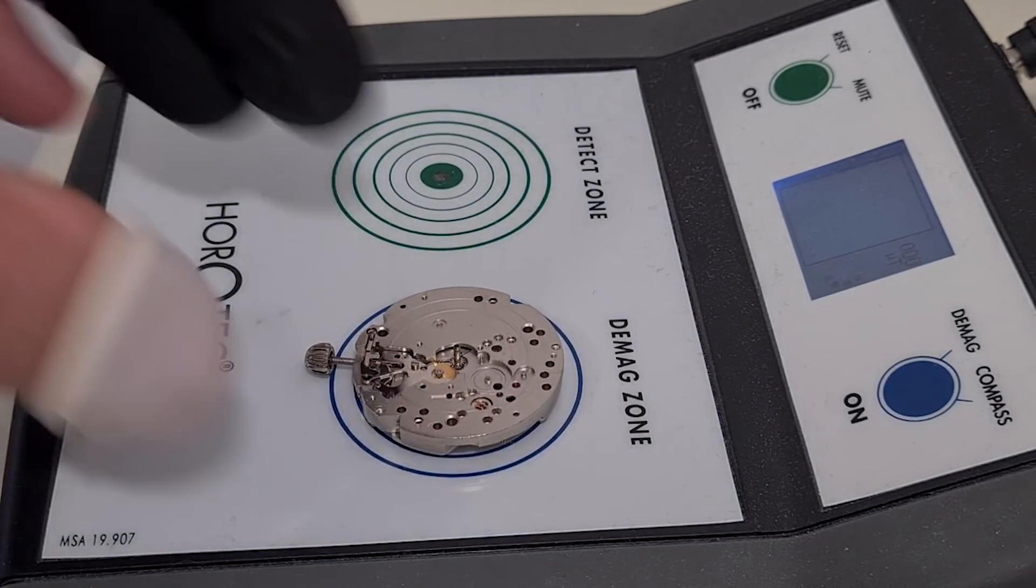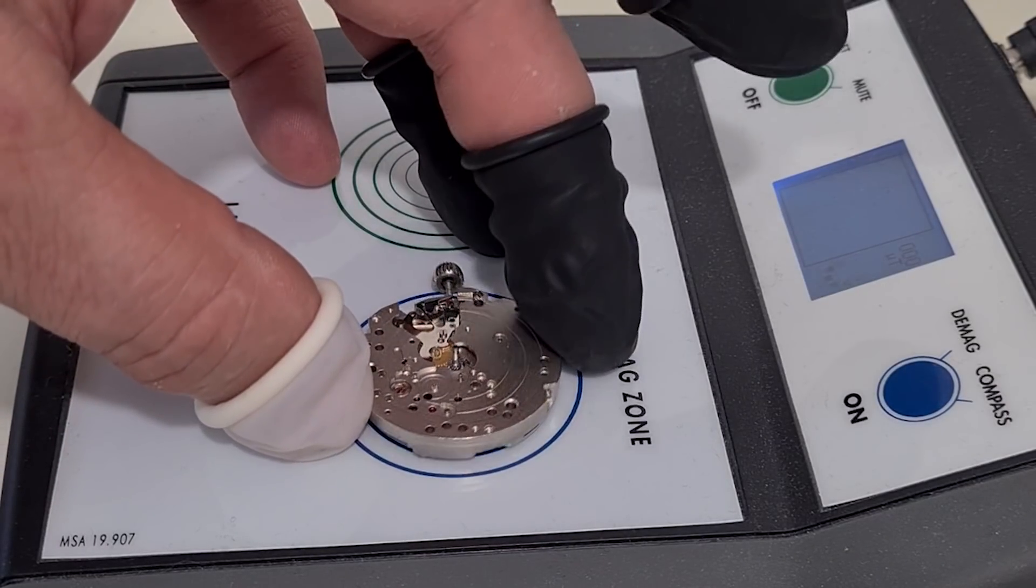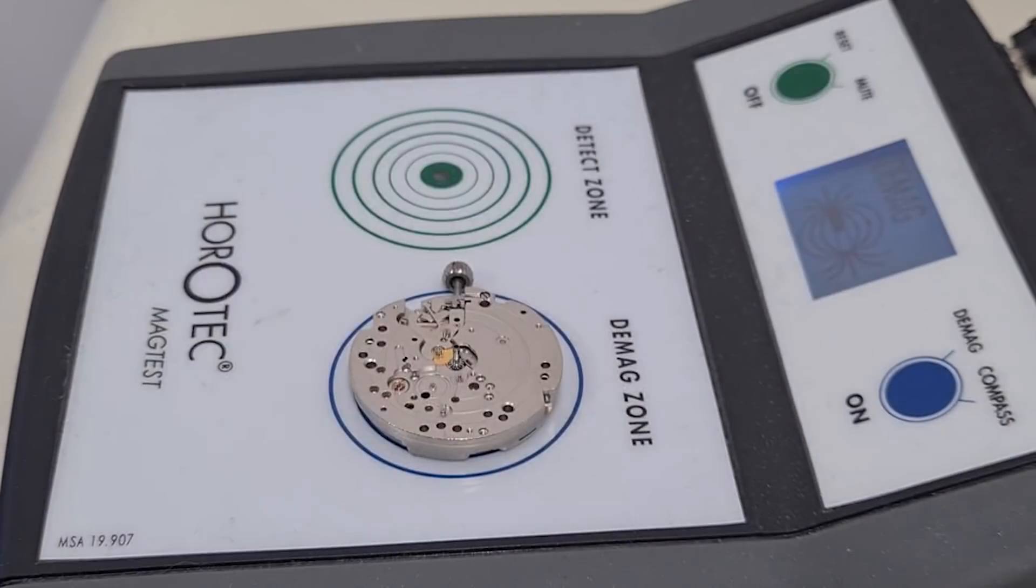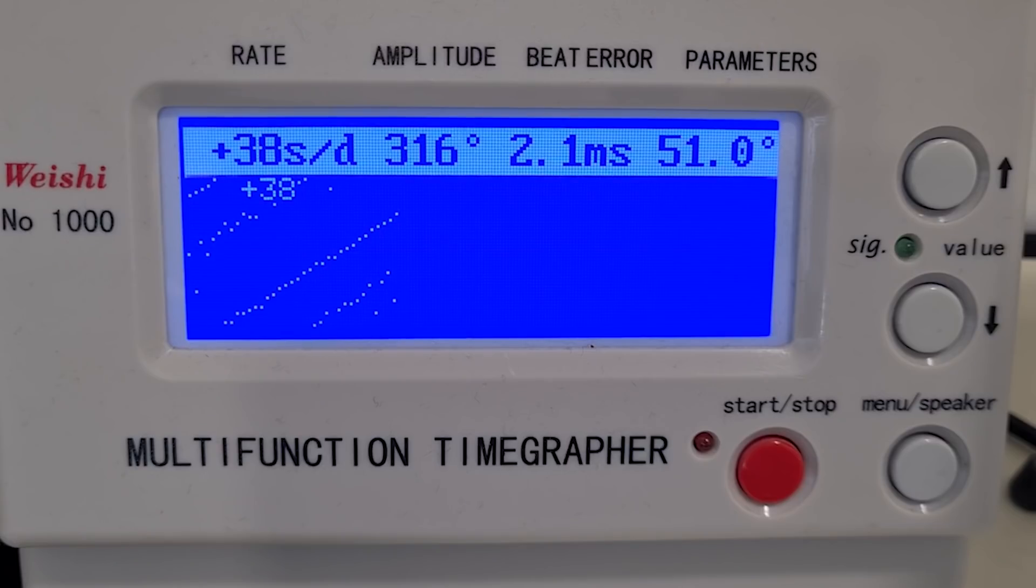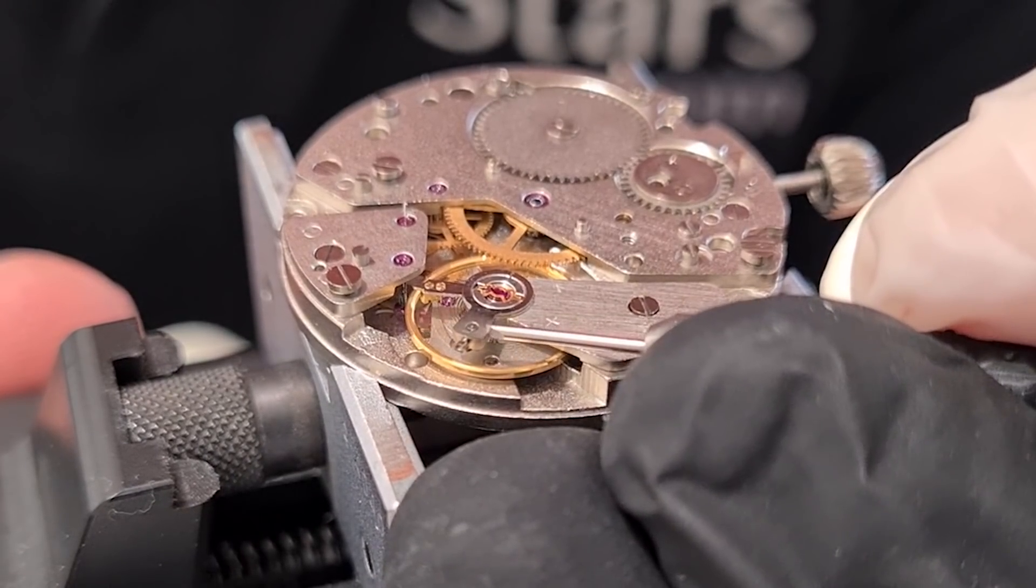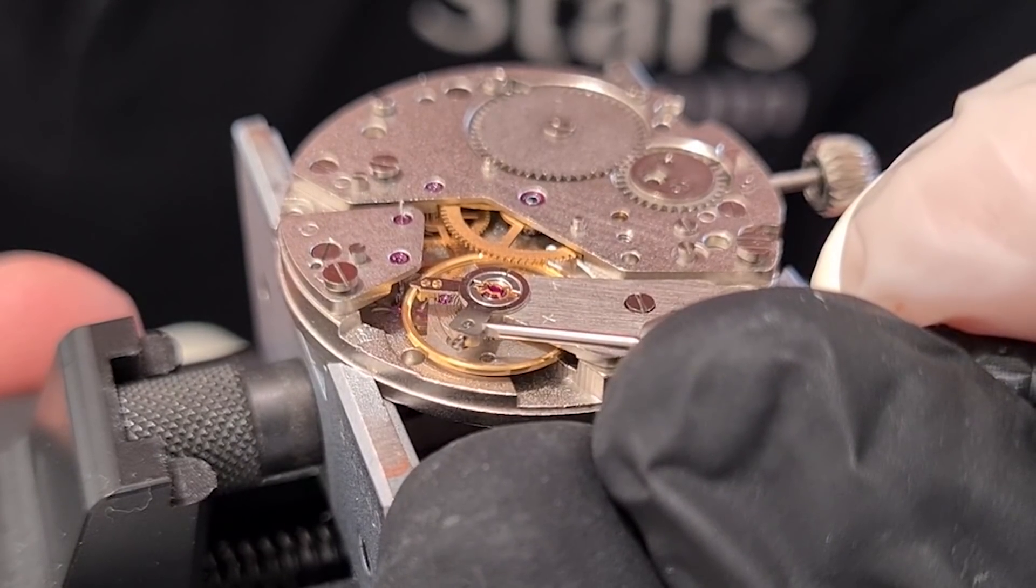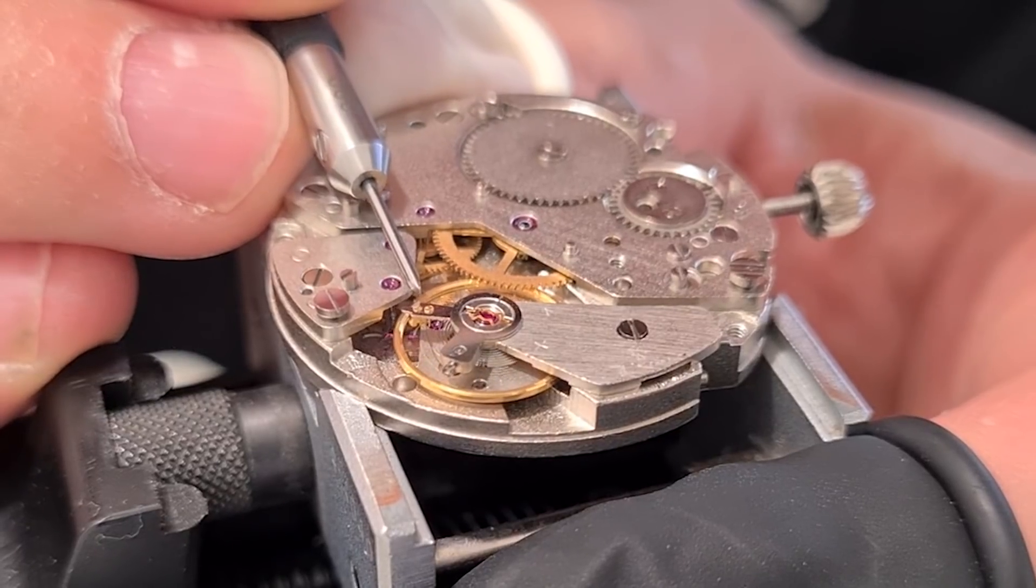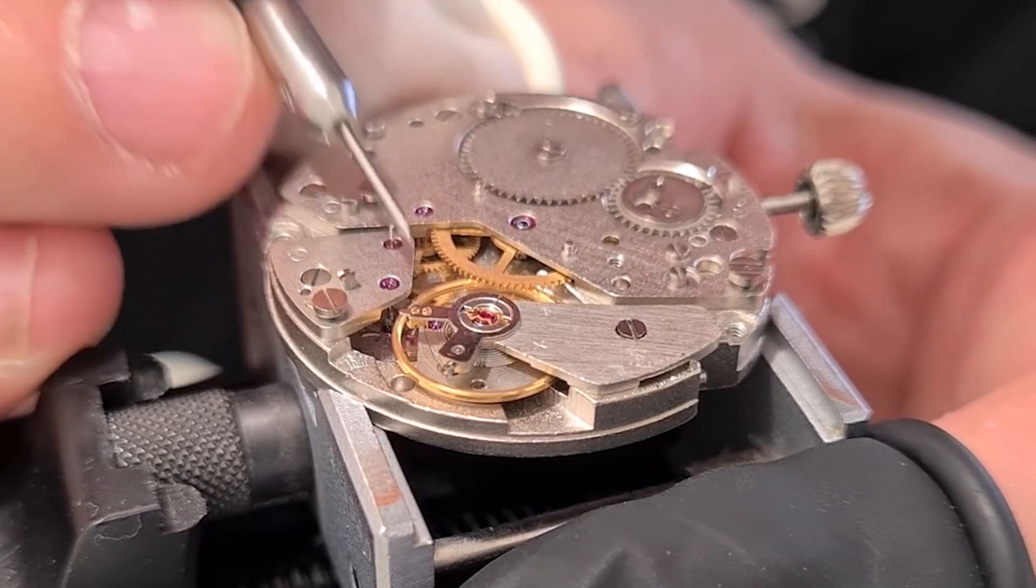This little machine here is a demagnetizer. Always demagnetize the movement before we test it. And that looks fairly good. We're going to take out the beat error first, and do that by moving this stud carrier. And when the beat error is close to zero, we can adjust the rate. And we're going to be happy with this for this watch.